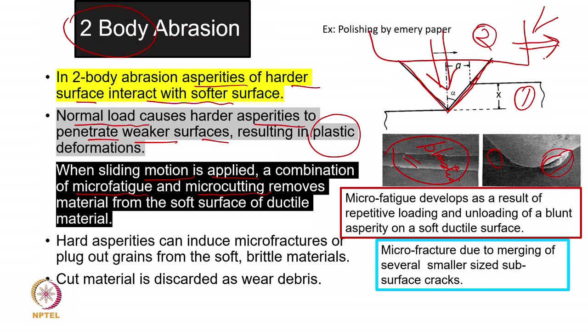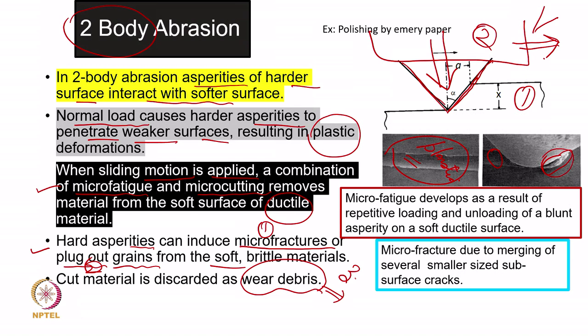In case of brittle material, the mechanism is similar but results will be different — what we call micro fracture, or removal of grains from the softer surface. So the difference is clear: for ductile material we think about micro fatigue and micro cutting, while for brittle material we consider micro fracture or plugging out of grains. Whether it is ductile or brittle material, there will be wear debris generation, and that wear particle in loose form will act as a third body — so two-body abrasion can lead to three-body abrasion.